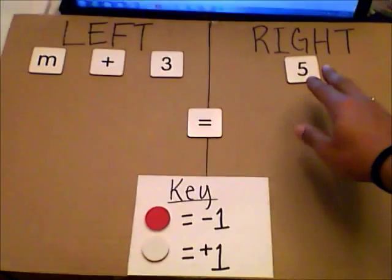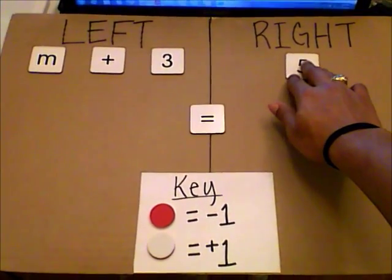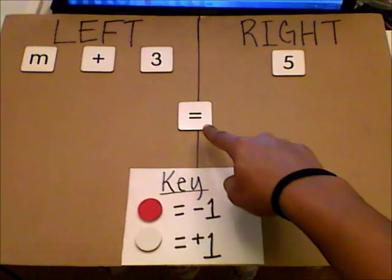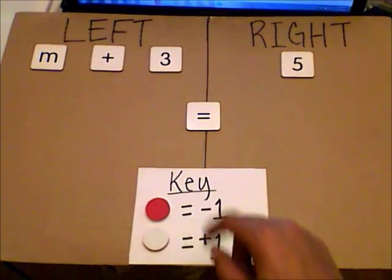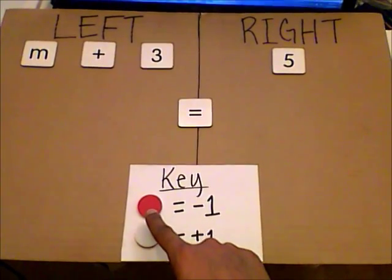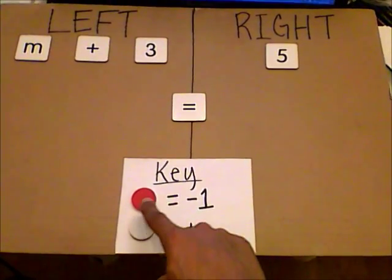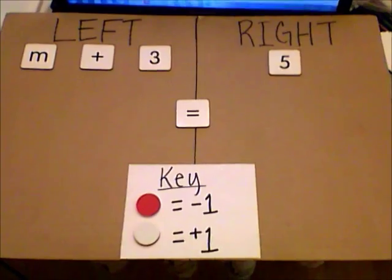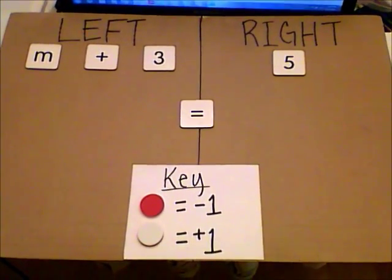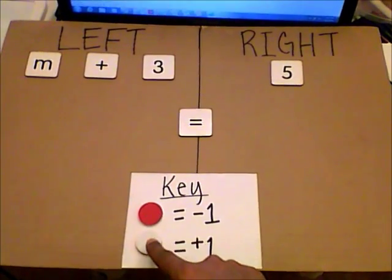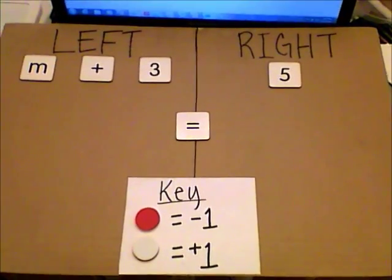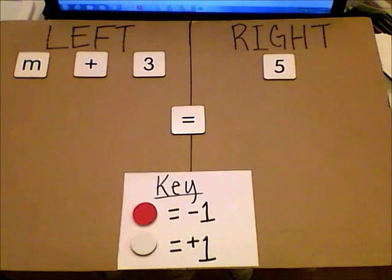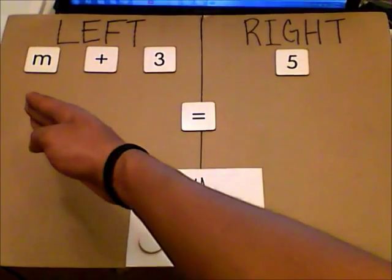What you're looking at now is my equation solving board. Every equation has two parts: the left hand side and the right hand side, with the equal sign in the middle. The key on the board shows that I'll use the red side of the counter for subtracting and the white side for adding. Red is negative and white is positive. The equation on the board is m plus 3 is equal to 5.